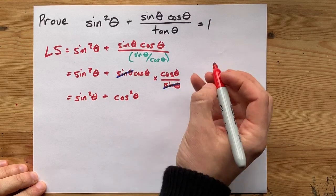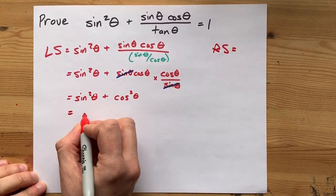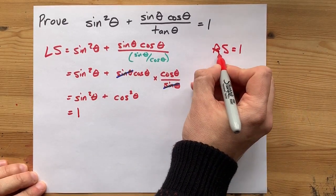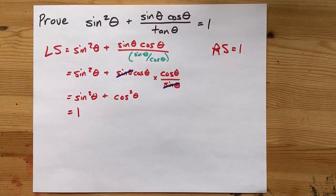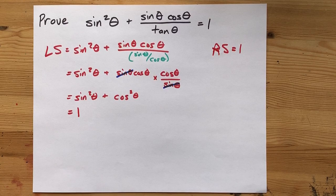Sine squared plus cos squared is the Pythagorean identity, and it's always equal to 1 for every angle. Oh, fortuitously, that equals the same right-hand side as this. That's wonderful. Let's celebrate with a therefore statement.